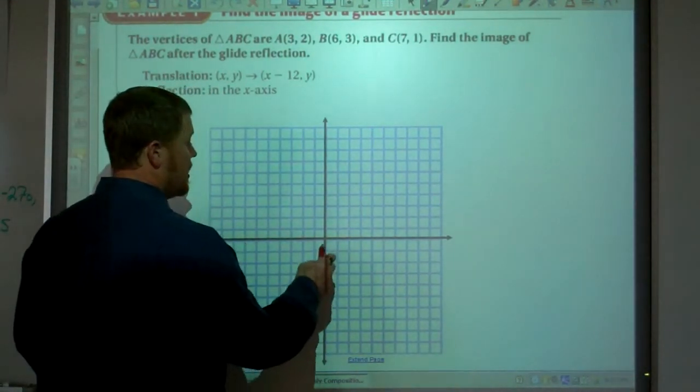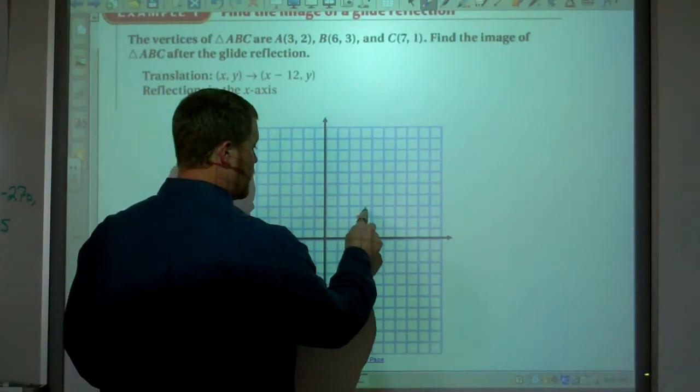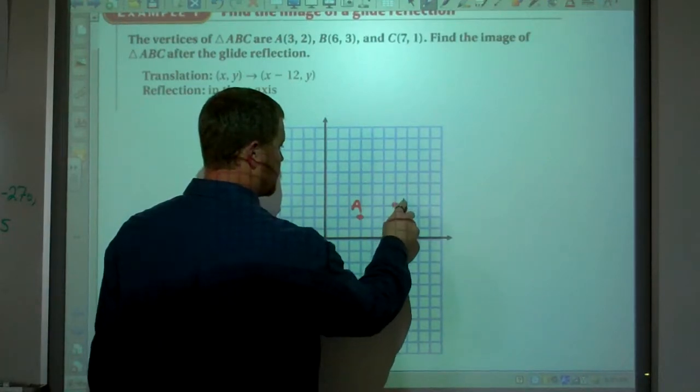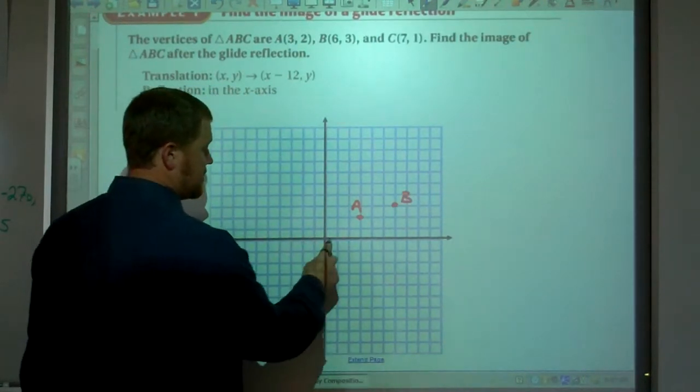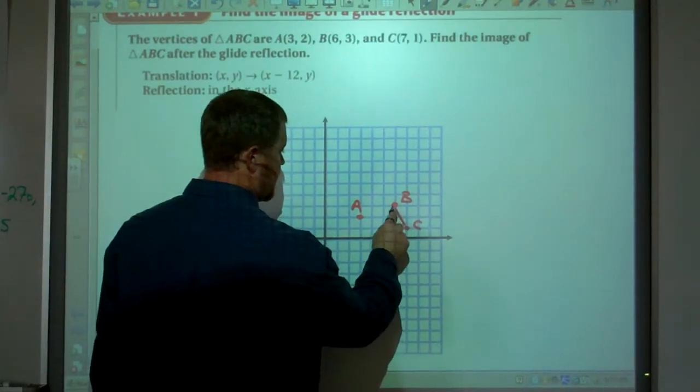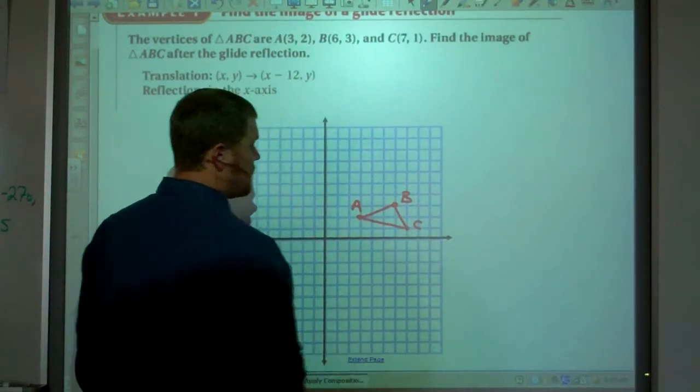So we have the original triangle. 3 comma 2, there's point A. Point B is 6 comma 3. And C is 7 comma 1. Alright, so there's our triangle, the original triangle.